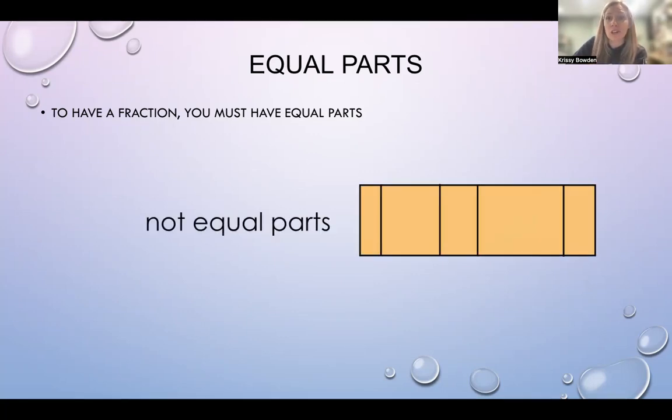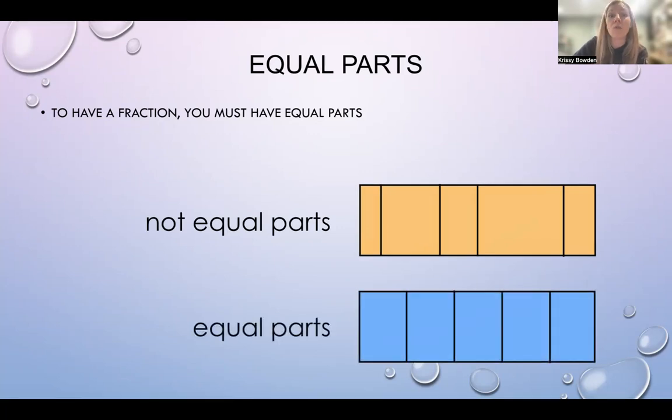Look at this picture. This is not equal parts. This is equal parts. If you shared this with five of your friends, you and four friends, five of you in all, you would each have the same size. Think of it like a big chocolate bar.